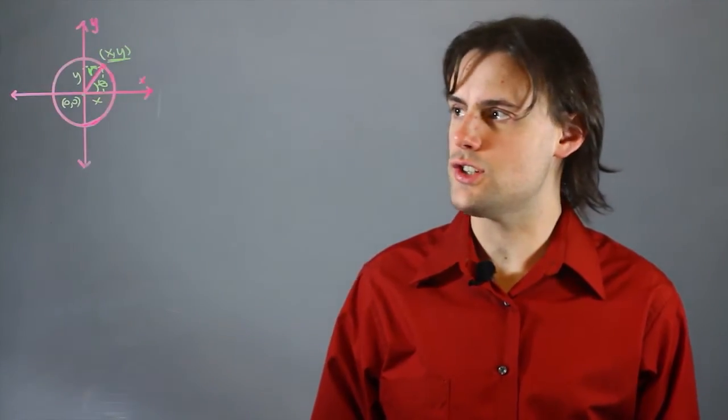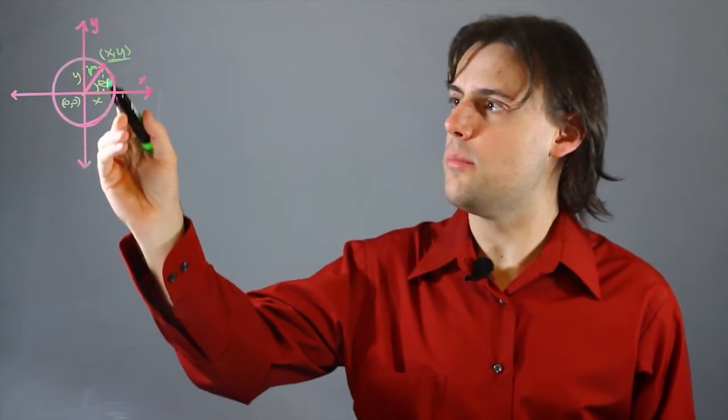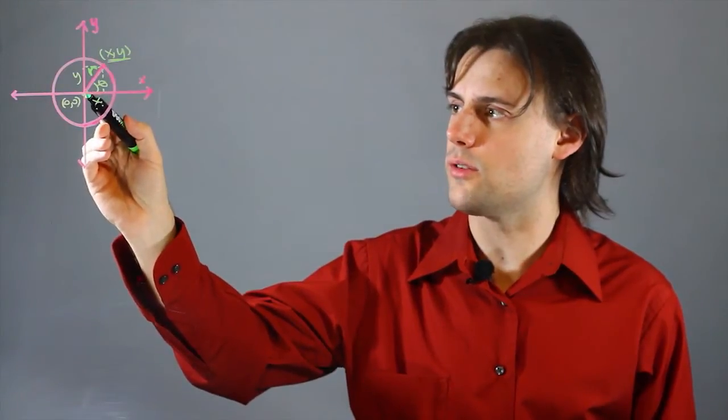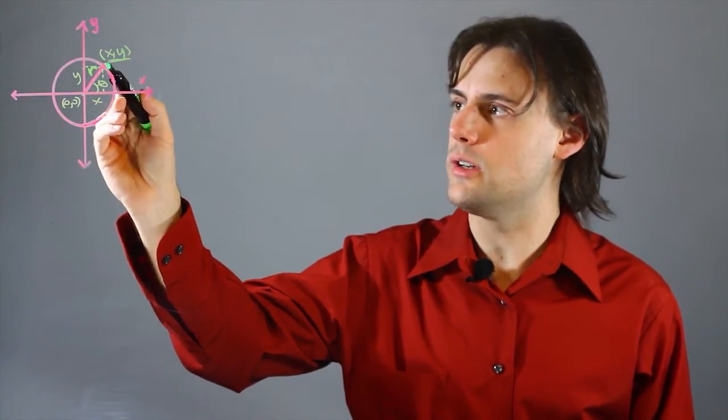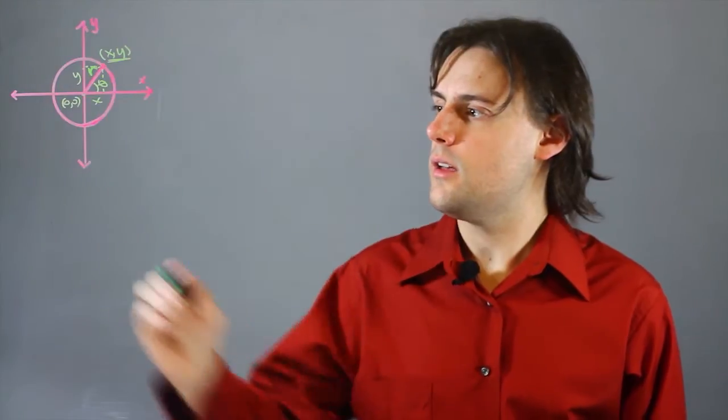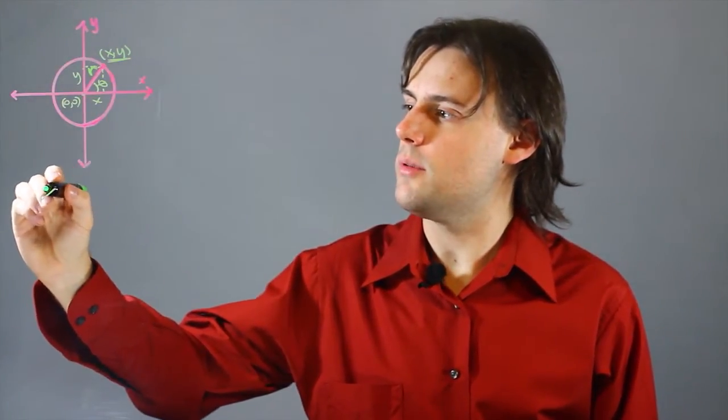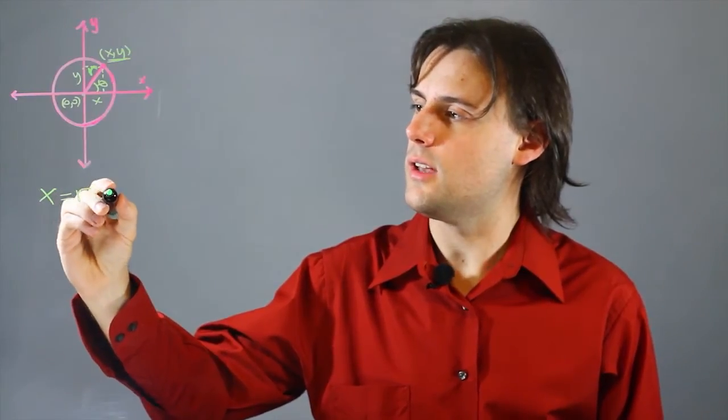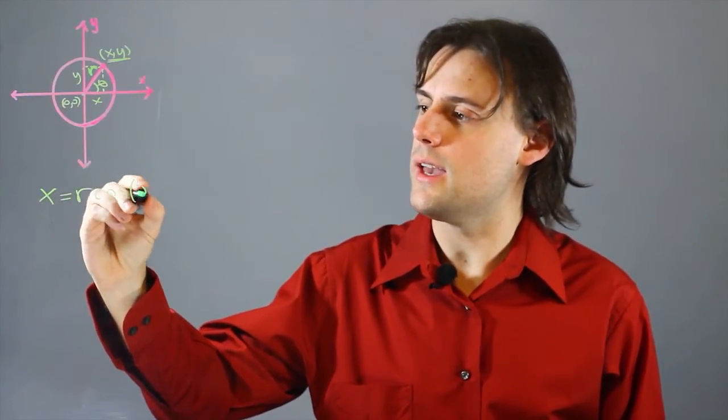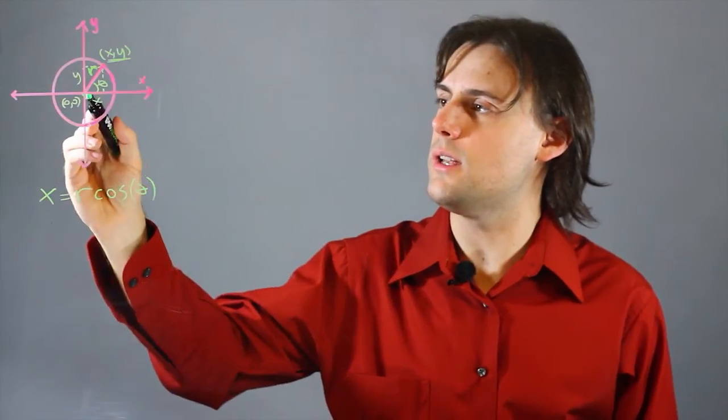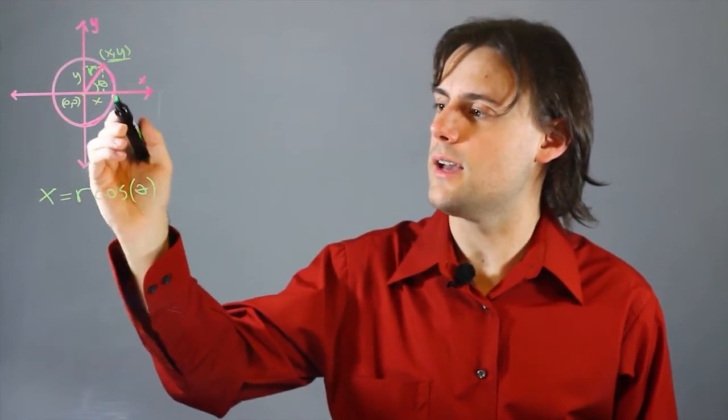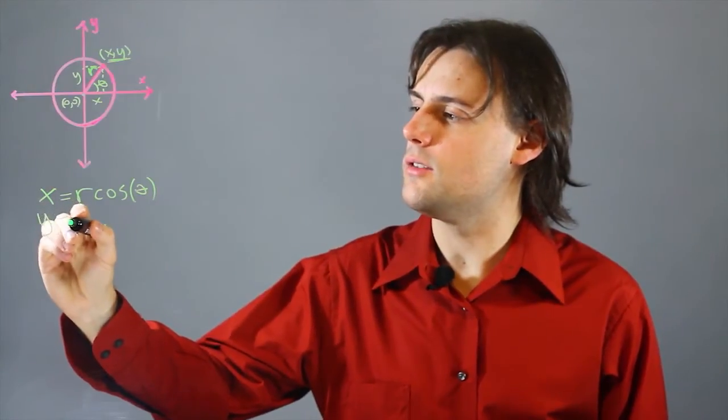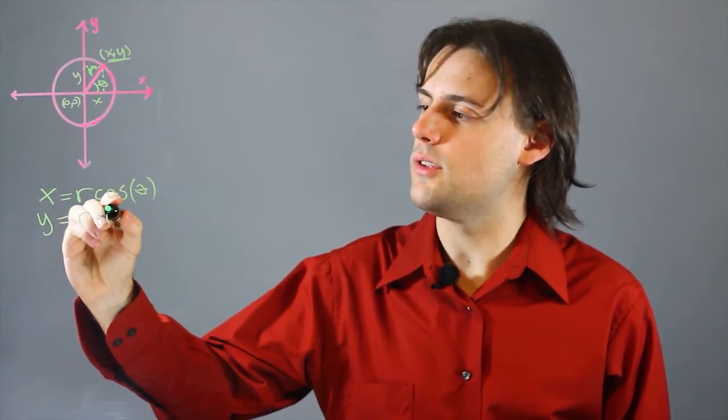I can consider the relationship between the x component of this radial vector going from the center of the circle, the origin, and a point on the circle. That relationship is given for x as x equals the radius times cosine of the angle theta that is made between this vector and the x axis. And likewise I have y is equal to r times sine of theta.